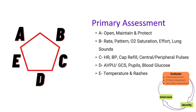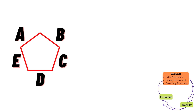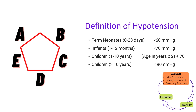Hypotension is defined by systolic blood pressure and age. For a term neonate (0 to 28 days), it is 60 mmHg or below. For infants (1 to 12 months), it is 70 mmHg and below. For children between 1 to 10 years, it is age times 2 plus 70. For children 10 years and above, it is 90 mmHg. These blood pressures are based on the 5th percentile — a systolic blood pressure lower than all but 5% of normal children.